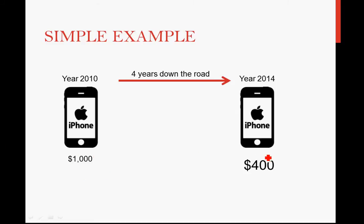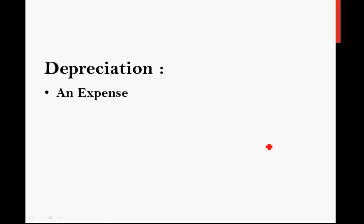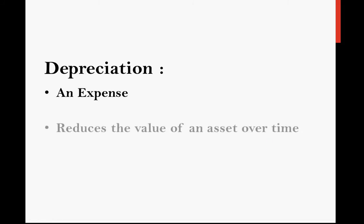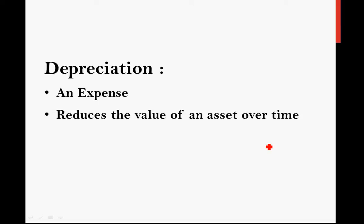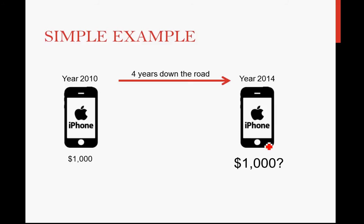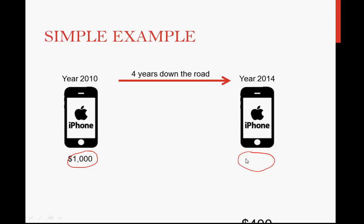Do you see — from $1,000 to $400? Depreciation, as you see from the iPhone example, is something bad. From $1,000, it dropped to $400. It is an expense. Depreciation is an expense, and what depreciation does is that it reduces the value of an asset over time. Your iPhone used to be $1,000, but in 2014, four years down the road, it is only worth $400. The value reduces from $1,000 to $400.